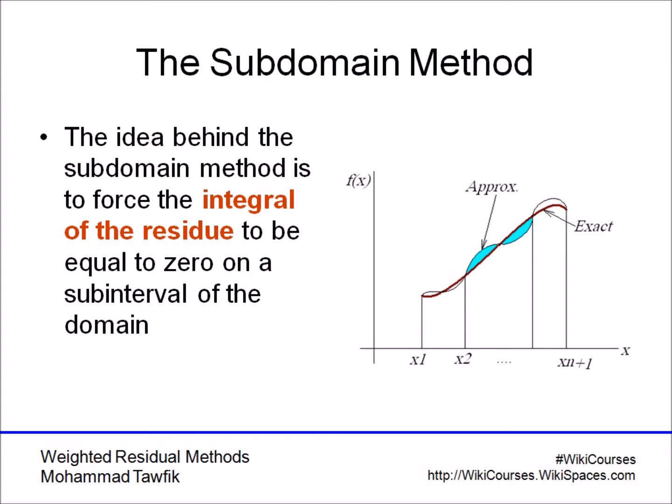So what we do here is we integrate the residue over a part of the domain, and in that part we force the integral of the residue to be equal to zero. So now imagine that you are integrating a function from x equals 3 to 5, and then that integral is equal to zero.